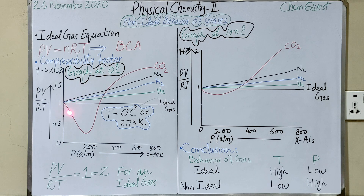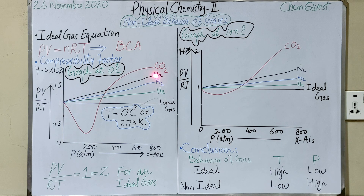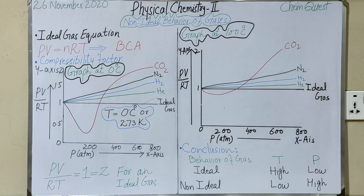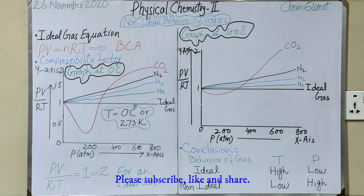Looking at other gases, helium — a monoatomic gas — shows positive deviation at zero degrees centigrade. Hydrogen also shows positive deviation. Nitrogen, which exists in diatomic form, also deviates from ideal behavior. The reason for this non-ideal behavior is that in kinetic molecular theory, it is assumed there are neither attractive nor repulsive forces between gas molecules, which is not true in reality.